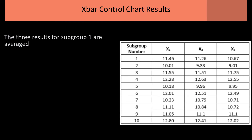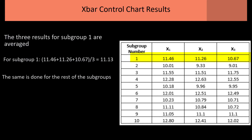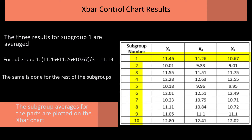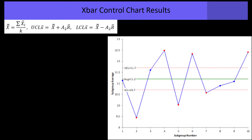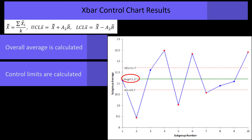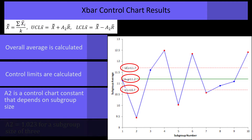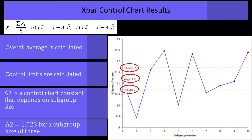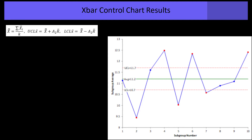Now we're going to move to the X-bar control charts. The results for each subgroup are averaged — for subgroup 1 the average is 11.13. You do that for all subgroups and then plot those averages on the X-bar chart. You calculate your grand average and control limits using the equations shown here. X-double-bar is the grand average, K is the number of subgroups, and A2 is a control chart constant that depends on subgroup size. For a subgroup size of 3, A2 is 1.023.